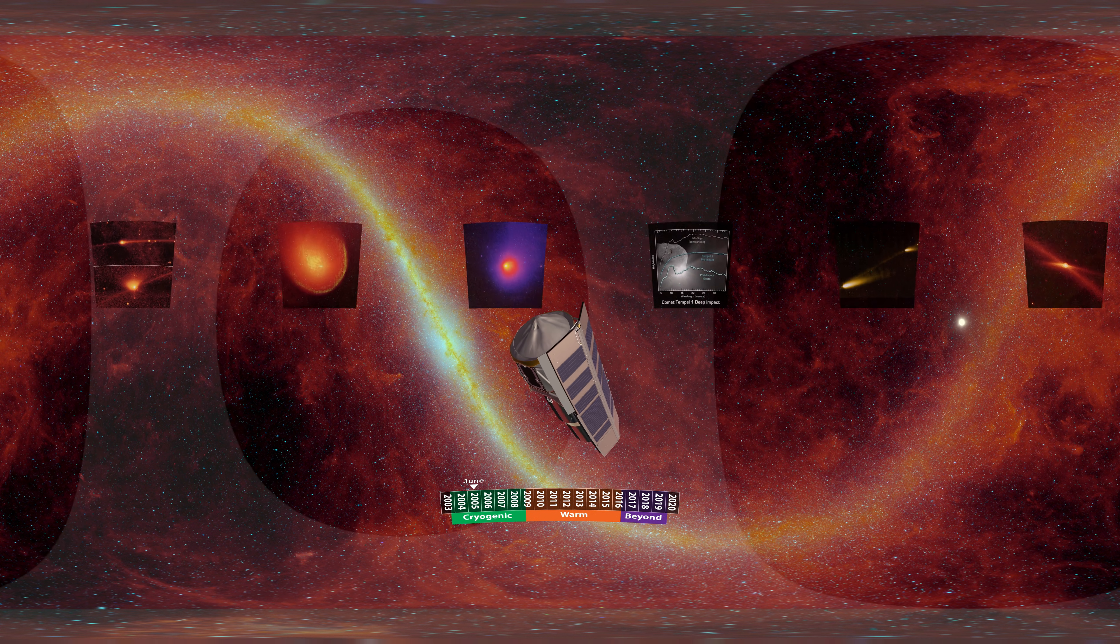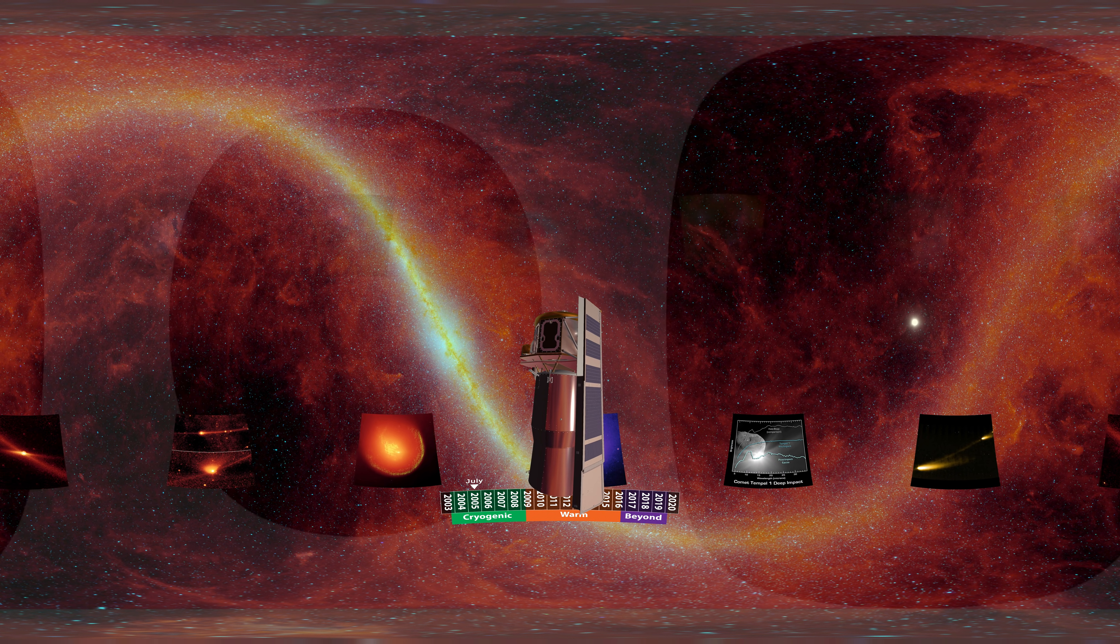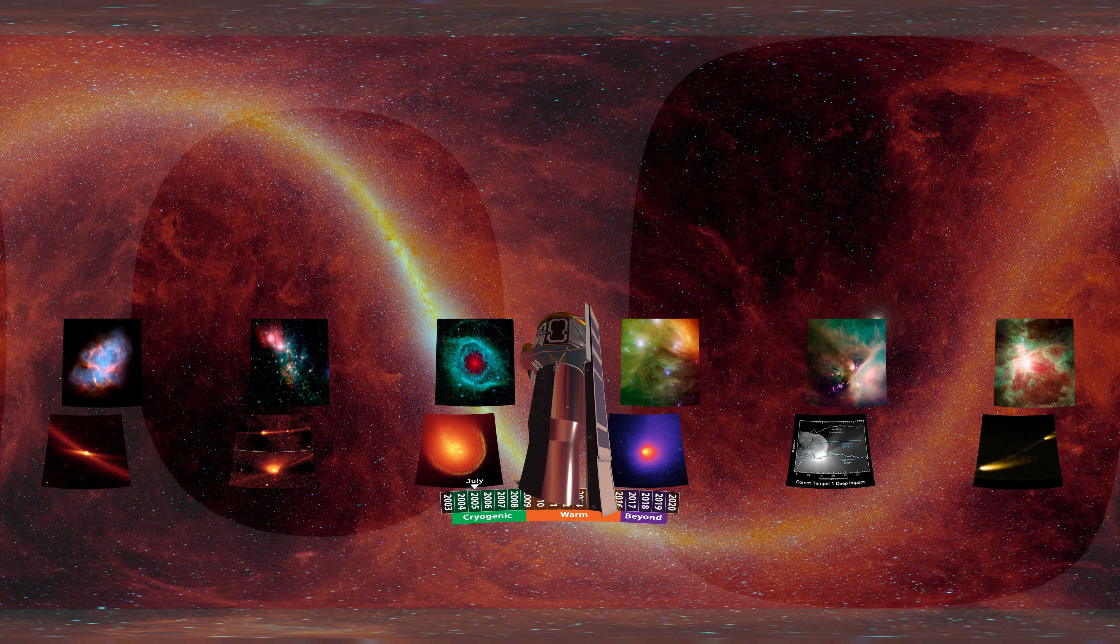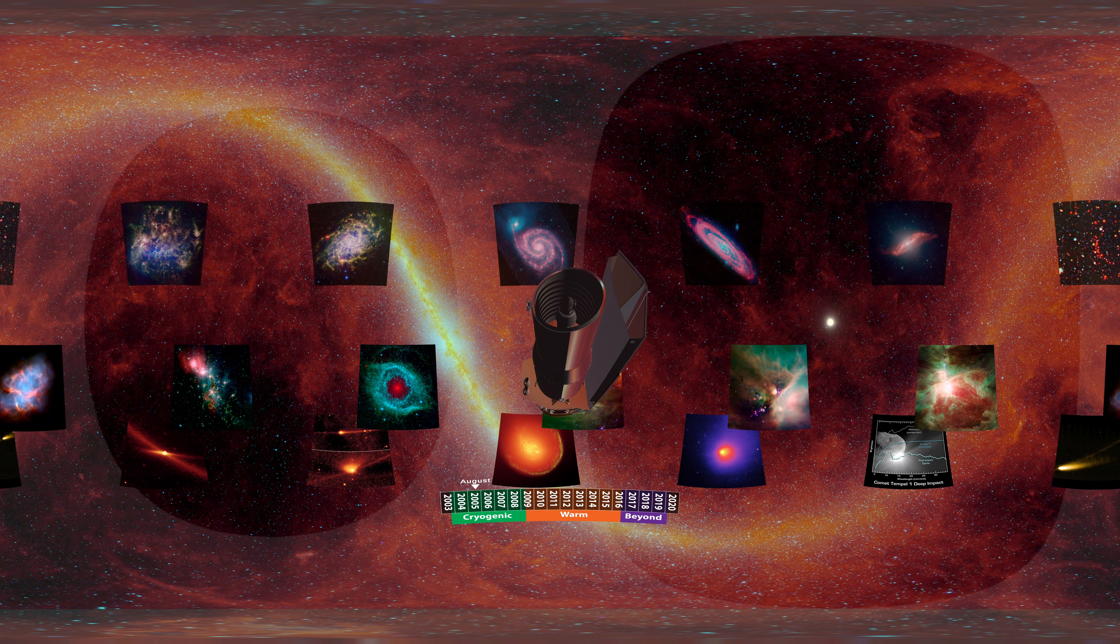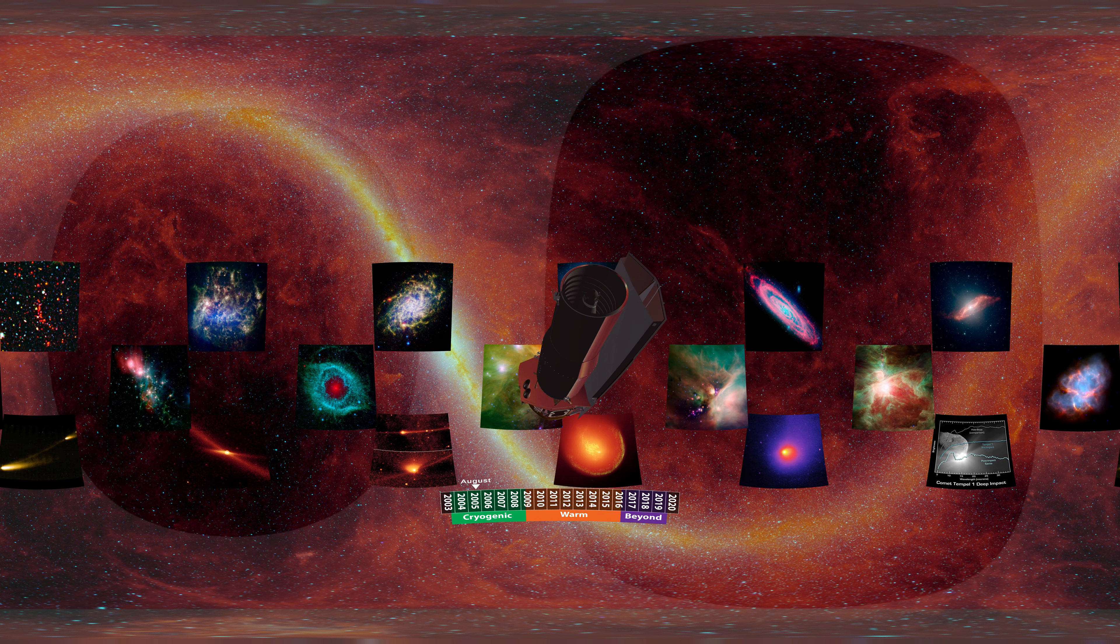Spitzer helped astronomers determine the makeup of asteroids and comets in our solar system, map out regions of star birth throughout the Milky Way, detect planet-forming material around young stars, and study countless galaxies, including the most distant ones ever seen at the edge of the observable universe.